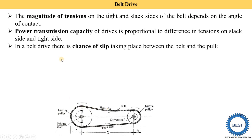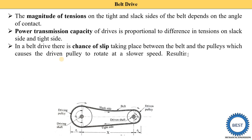In a belt drive, there are chances of slip occurring between the belt and the pulley, which causes the driven pulley to rotate at a slower speed, resulting in reduced power transmission. Slip occurs when the driving pulley rotates but the belt does not slide accordingly. Separate videos will be made on the magnitude of tensions, the equation for power transmission capacity, and slip in detail.